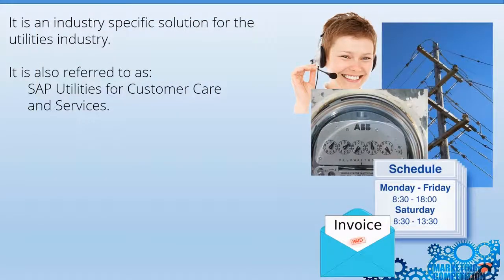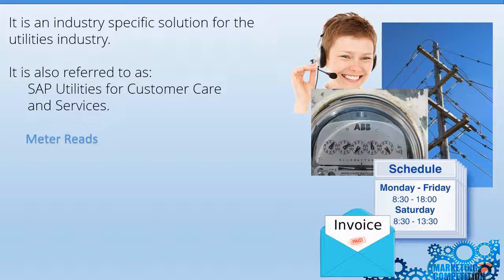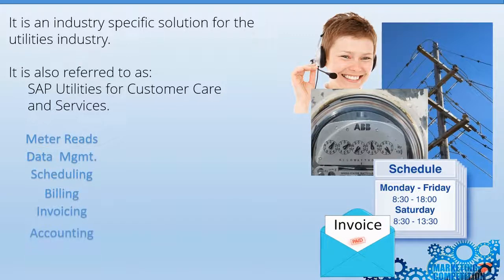SAP ISU is an SAP industry solution specific for the utilities industry. It's also a sales and information system that can support utilities and waste disposal companies. It supports commonly used business functions such as taking meter reads, data management, scheduling of meter reads, billing, invoicing, accounting, customer service, and integration to the CRM, which stands for Customer Relations Management.